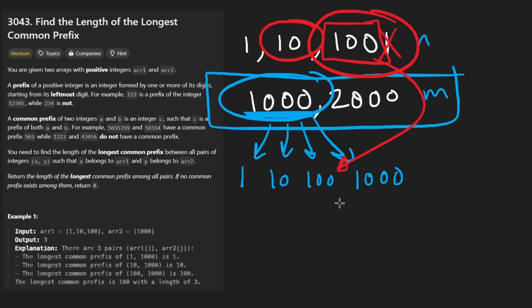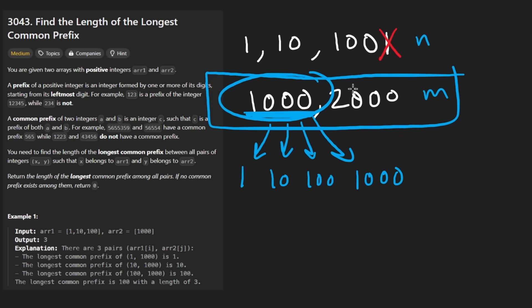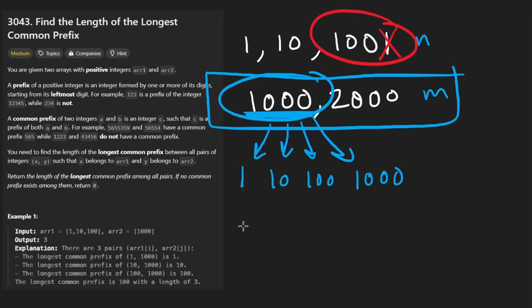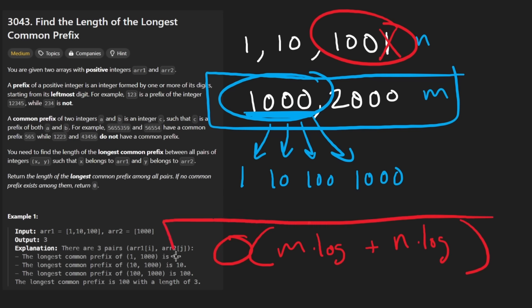This way, the overall time complexity is limited to doing the conversions — taking each number and getting its prefixes for both arrays. That's roughly O(m * log(max)) + O(n * log(max)), which simplifies to O(m + n). This is the most optimal solution.